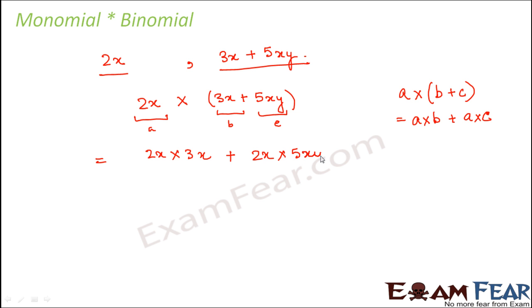So therefore we can write it as a into b, that is 2x into 3x, plus a into c, that is 2x into 5xy. So 2x into 3x, these are two monomials - this is just like finding out product of two monomials. First you multiply the coefficient, so 2 into 3 is 6, then you multiply the algebraic factor, so x into x is x².